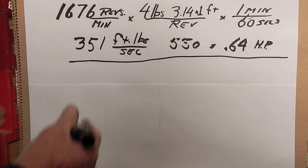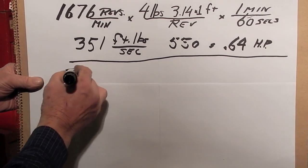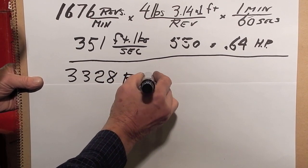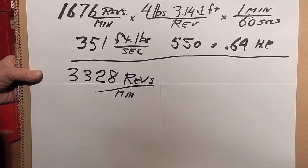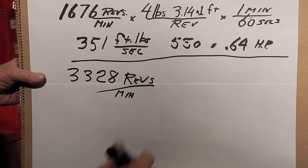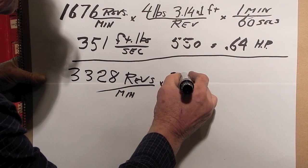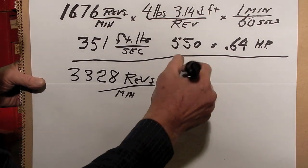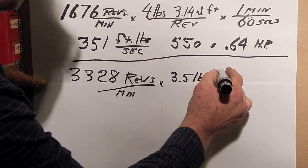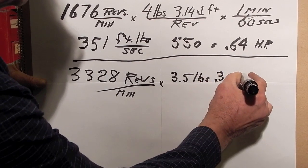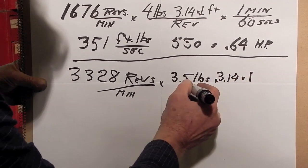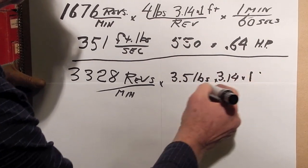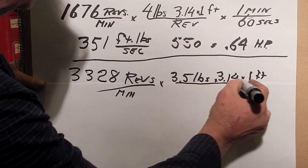This motor ran at 3328 revolutions per minute, and it created a force of 3.5 pounds. To get it into foot-pounds, we need to multiply it by 3.14 times one foot diameter.